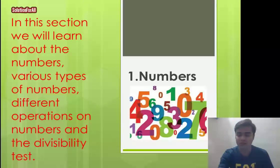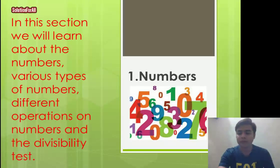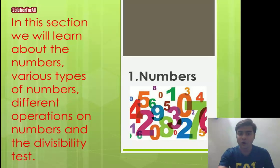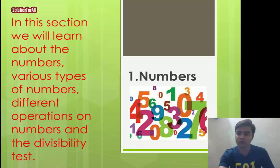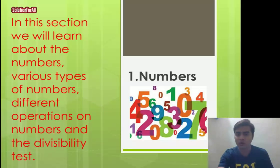In this video series on number systems, I'll be teaching you about various types of numbers: prime numbers, co-prime numbers, composite numbers, natural numbers, and whole numbers. I'll explain these with examples, cover operations on numbers, and teach the divisibility test — how to check if a large six or seven digit number is divisible by 2, 3, 4, 5, 7, 8, 9, 11, or 13 using simple tricks.